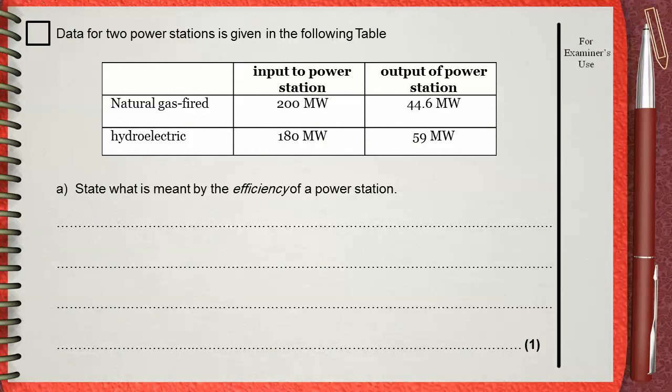Data for two power stations is given in the following table. Natural gas-fired: input to power station 200 megawatts, output of power station 44.6 megawatts. The hydroelectric power station: input to power station is 180 megawatts, the output is 59 megawatts.